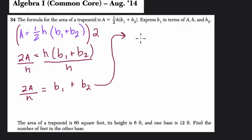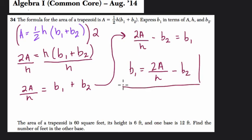Final step to isolate B1, I would subtract B2 from both sides. So I get 2A over H minus B2 equals B1. And I might reverse that order using the symmetric property. This is the same thing, I'm just setting up the equation so B1's on the left side. That's just my personal preference. And that would be my answer.